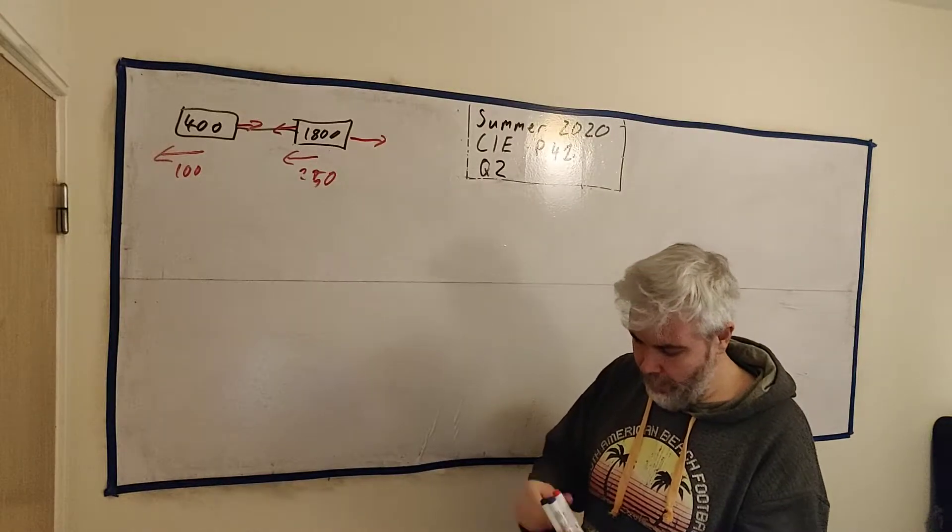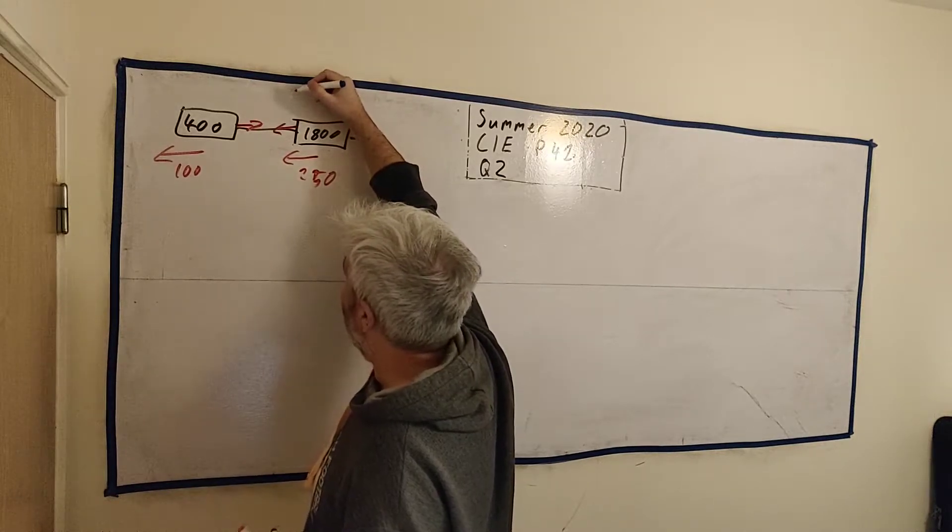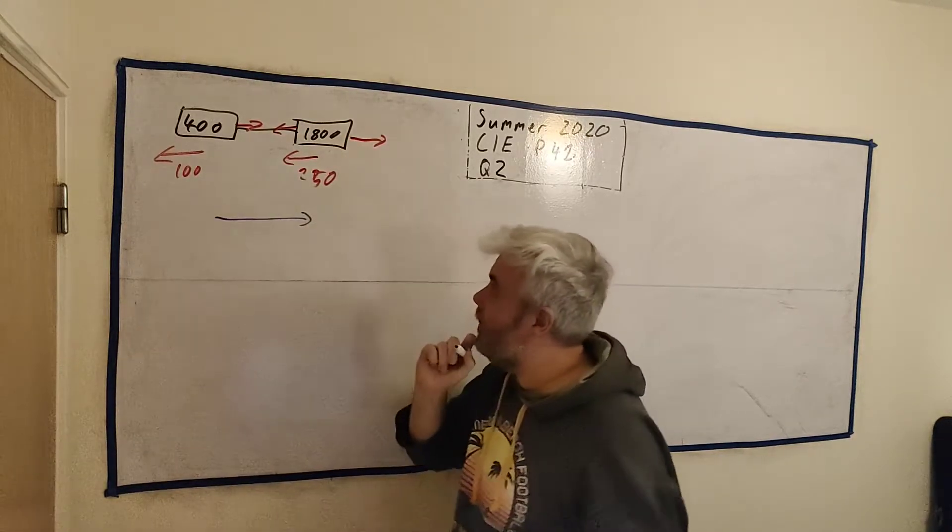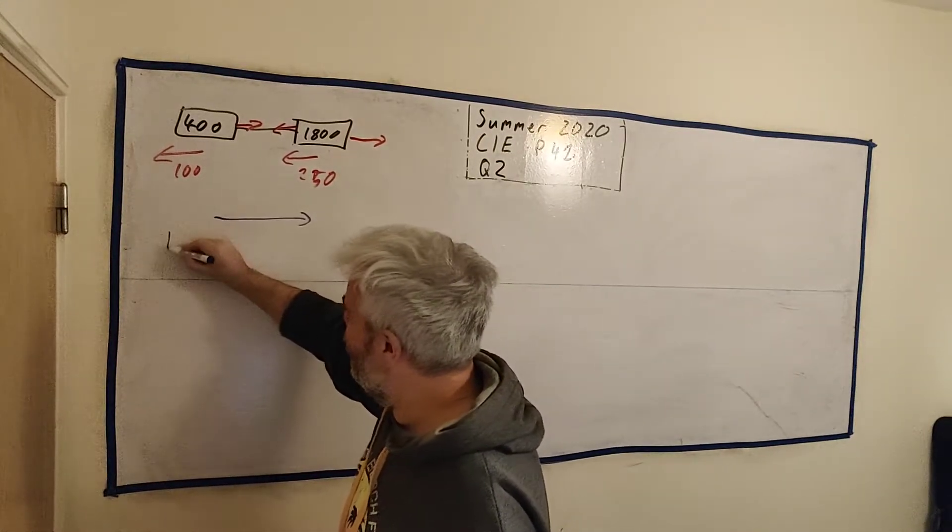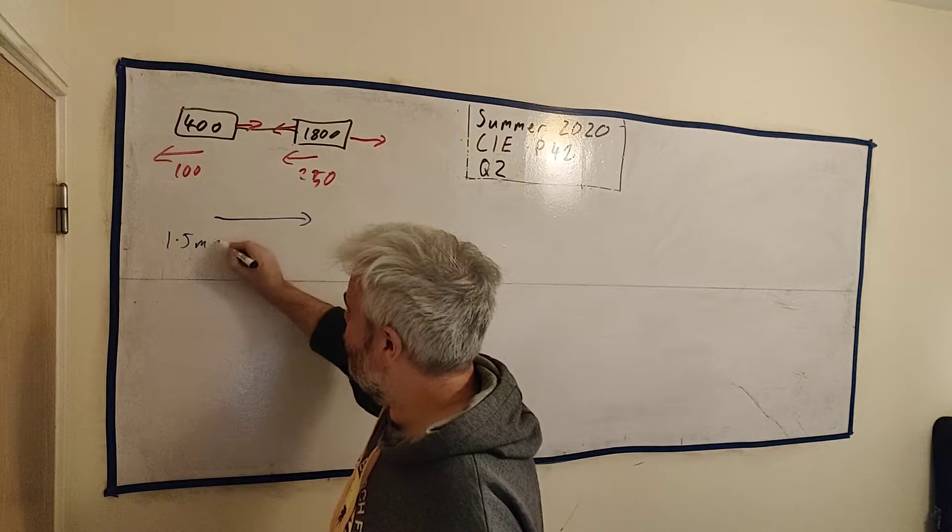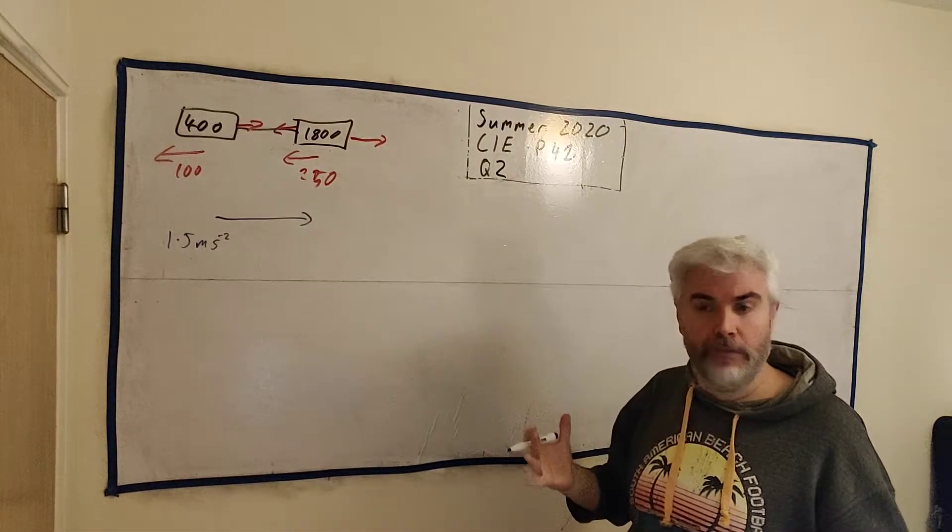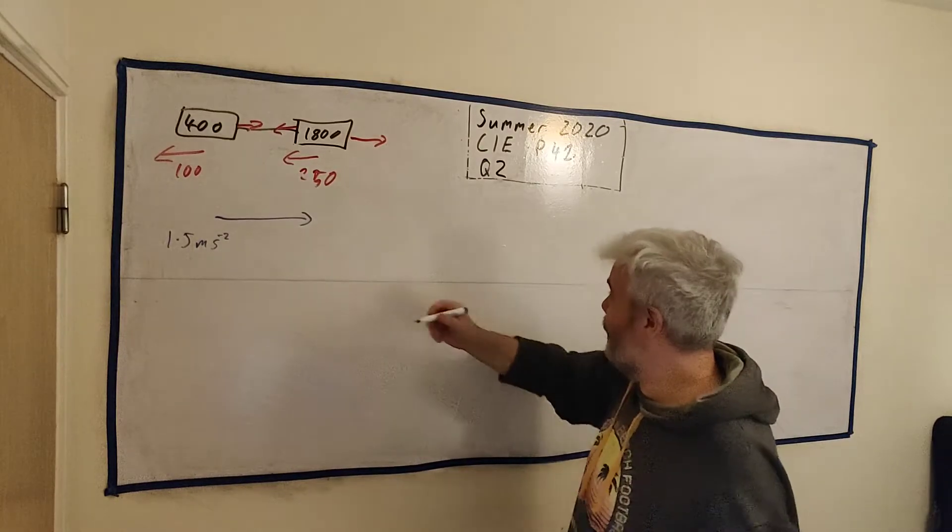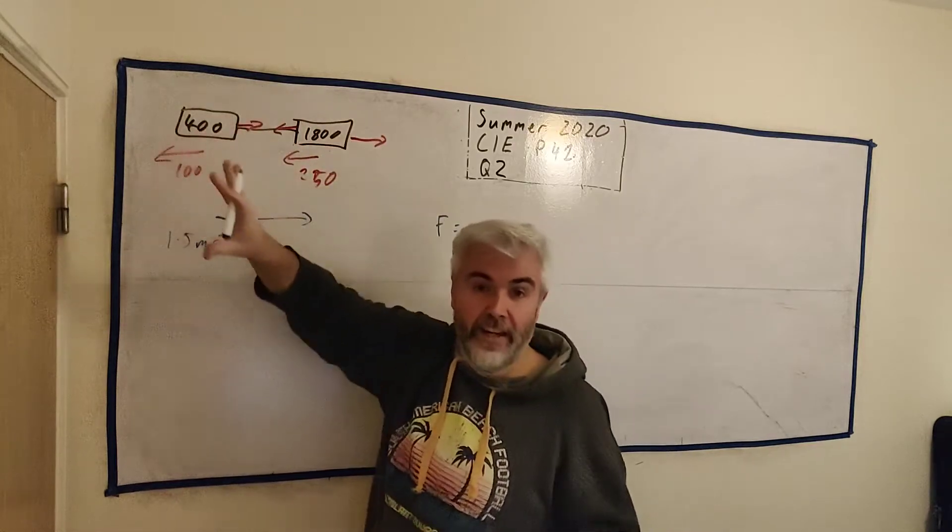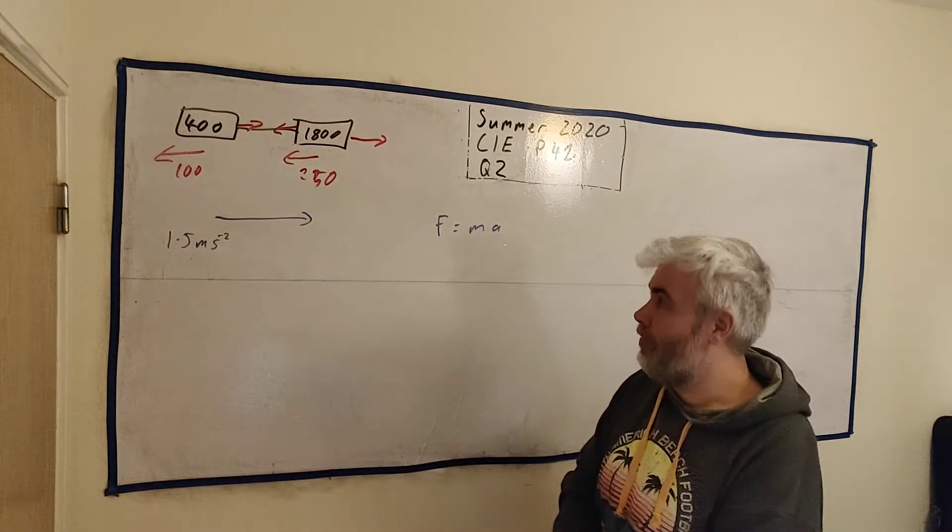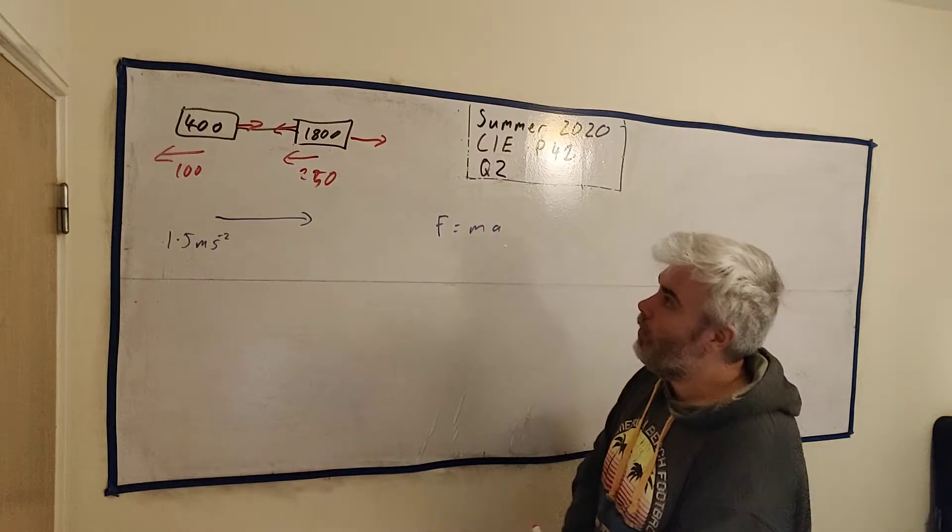We have one more bit of information. Overall, this thing is traveling this way at 1.5 meters per second squared, its acceleration. So there must be some sort of force overall, because that's where we get acceleration. F is equal to ma. This entire thing here must be traveling with some amount of force. And that's how we break down this question.